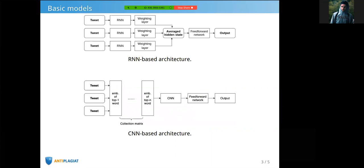In our experiments we use two different neural network architectures. The first is RNN-based architecture. It consists of three main components: RNN, weighting layer with averaging, and feed-forward network.